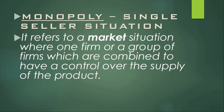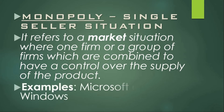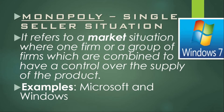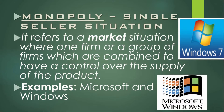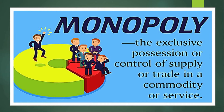Monopoly refers to a market situation where one firm, or a group of firms combined, has control over the supply of a product. In a single sentence: a market with a single seller, a large number of buyers, and a product which has no close substitutes is called the monopoly market. The example is Microsoft and Windows. In summary, monopoly means exclusive control over the supply or trade in a commodity or service.